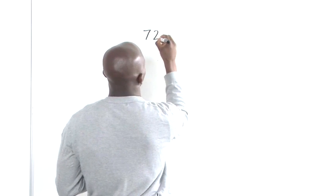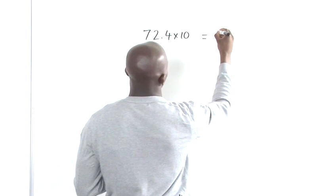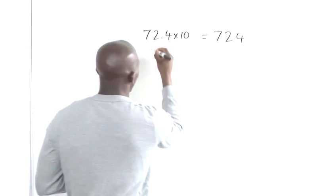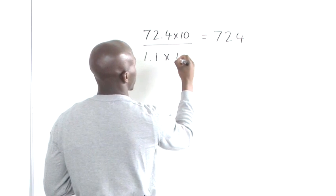72.4 times 10 equals 724 divided by 1.1 times 10, and that equals 11.